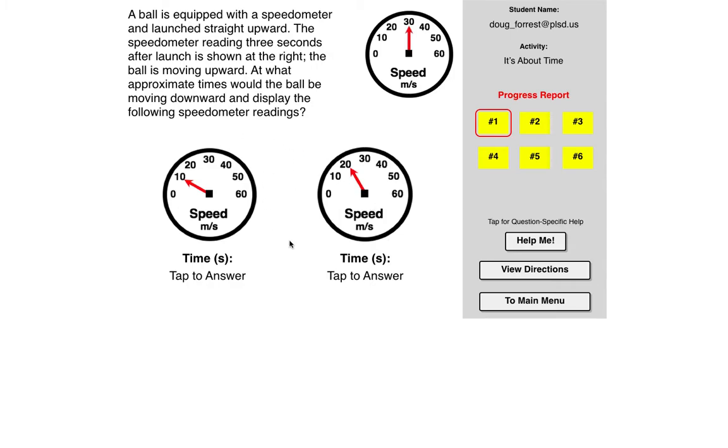So these are tricky, I think. So I may do a couple of them here. Again, there's a lot of unique variations. So a ball is equipped with a speedometer. So here they're using speedometer correctly because it doesn't tell direction. The speedometer reading three seconds after launch is shown to the right, the ball is moving upward.